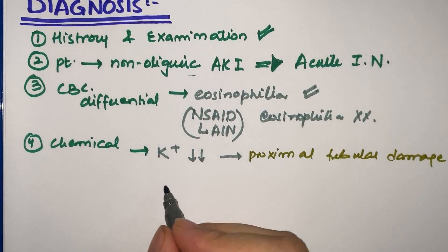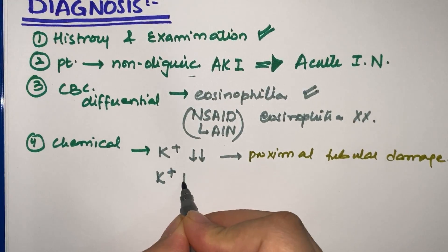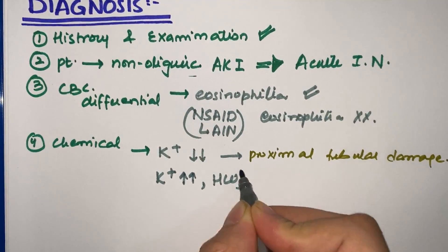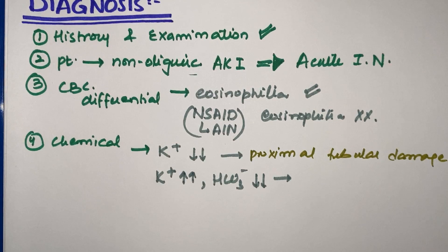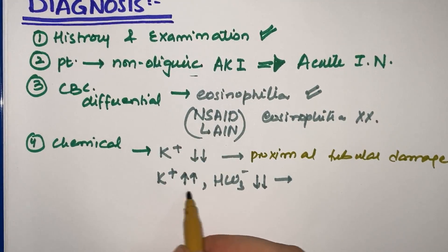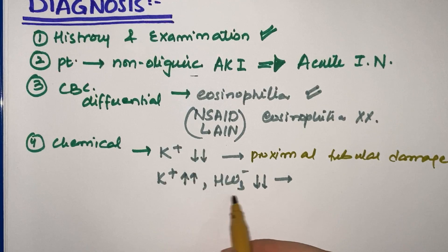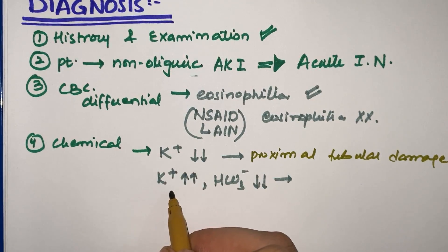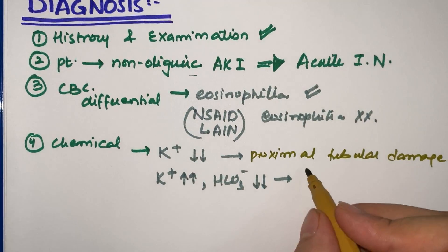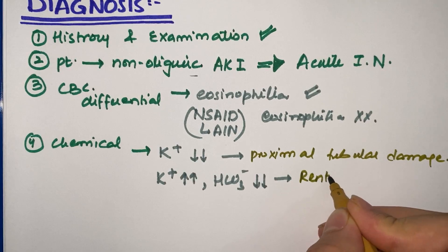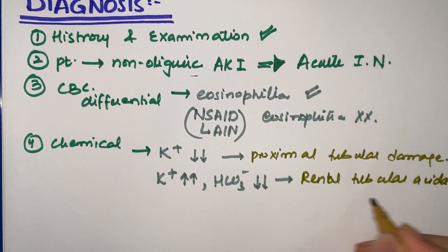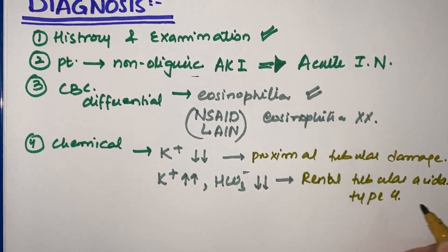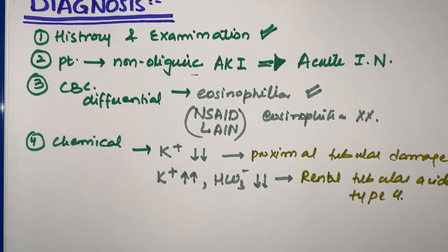If potassium levels are high and bicarb levels are low, this is very important. High potassium with low bicarb means acidosis with increased potassium, which indicates renal tubular acidosis type 4. If this feature is seen in chemical analysis, it suggests type 4 renal tubular acidosis.